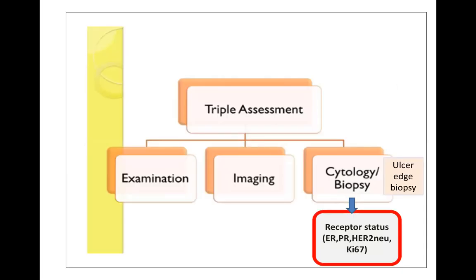You will evaluate this patient via triple assessment, which includes clinical examination, imaging, and biopsy. If you recall the scenario, the growth in this patient has fungated — that is, it is ulcerated through the skin. So in this case, we don't need a true cut biopsy; we can simply go for ulcer edge biopsy and send the specimen for histopathology.